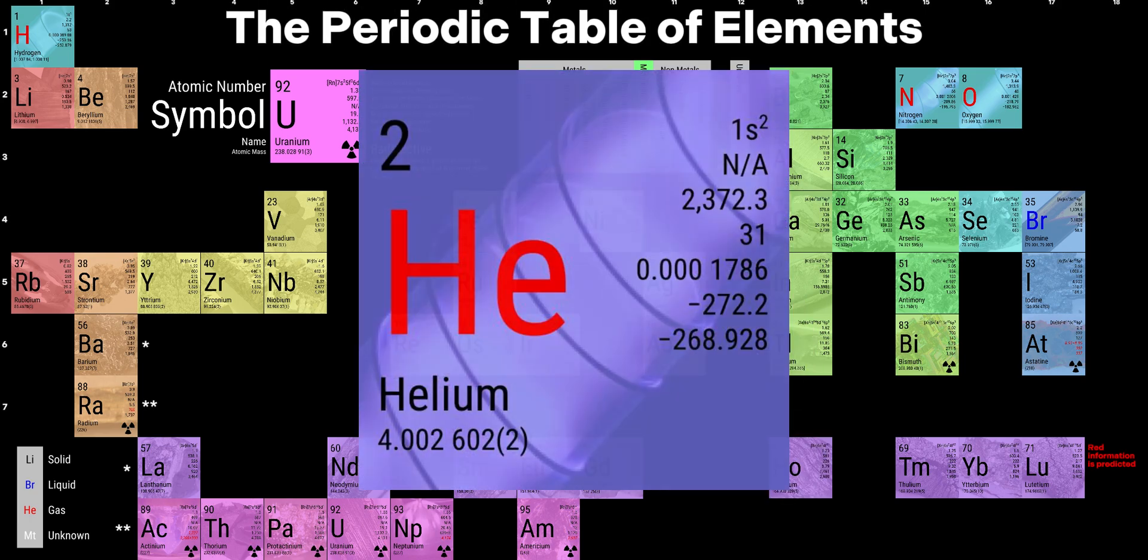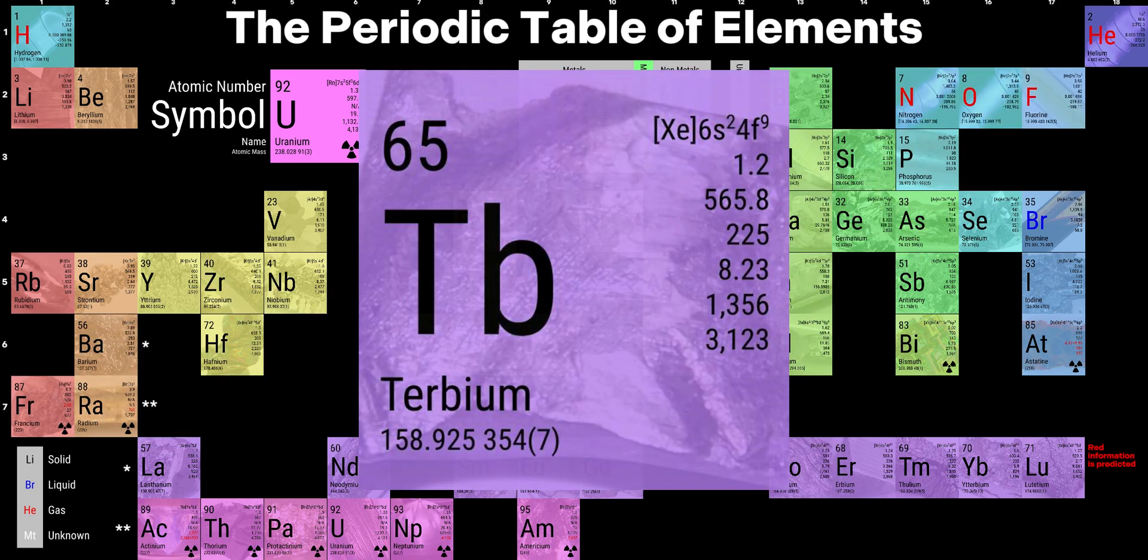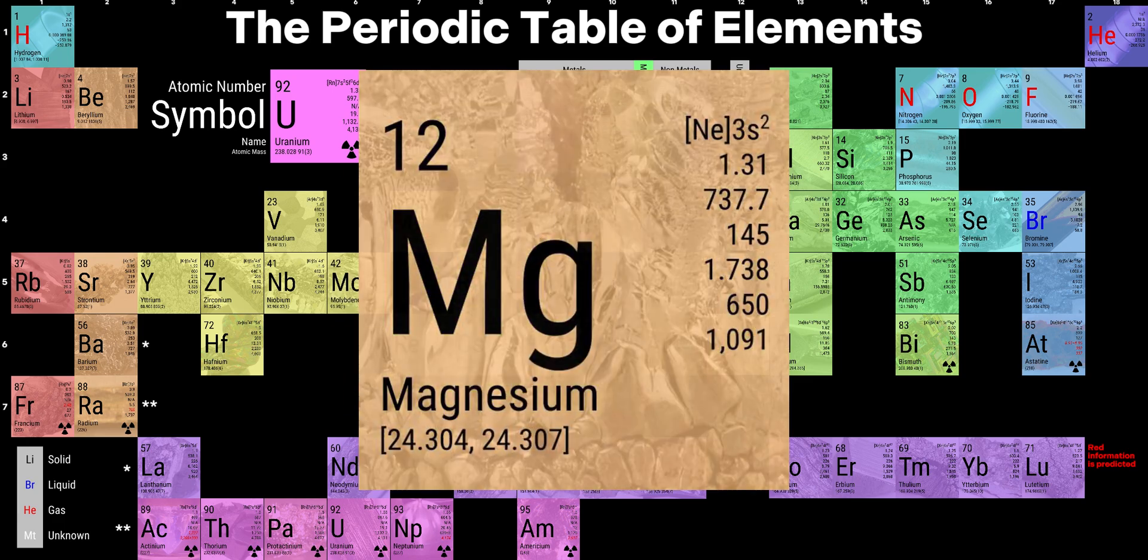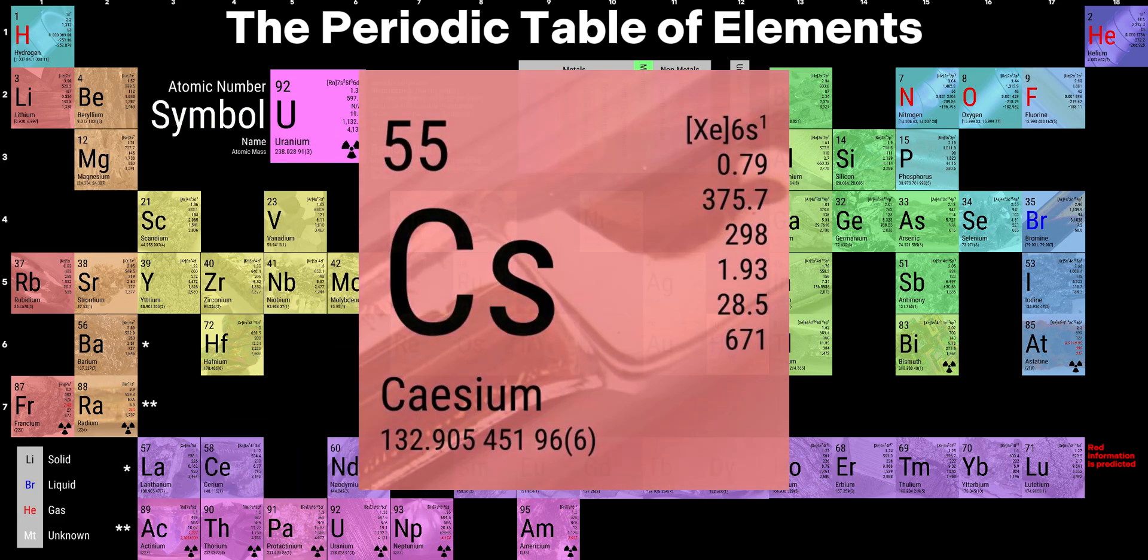There's holmium, and helium, and hafnium, and erbium, and phosphorus, and francium, and fluorine, and terbium, and manganese, and mercury, molybdenum, magnesium, dysprosium, and scandium, and cerium, and cesium, and lead,